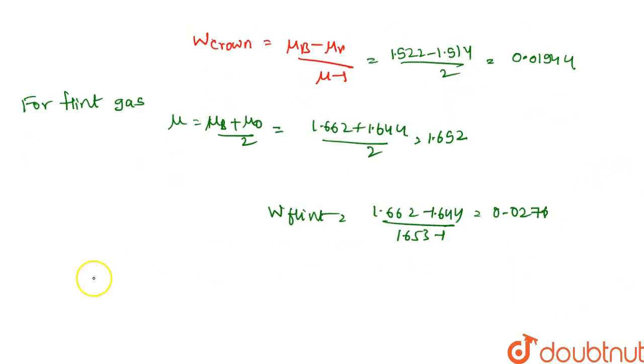Now, angular dispersion. Angular dispersion is equal to δ_v minus δ_r, which is equal to ω times δ. This is the formula of angular dispersion.